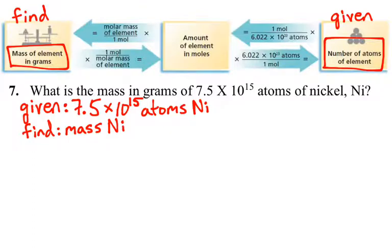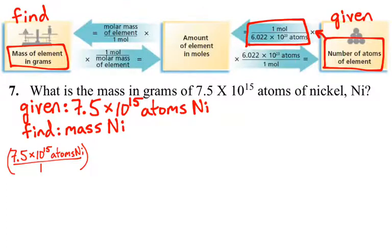So, again though, we will start off the way we always do. We write down what we are given in fractional form. So, we're given 7.5 times 10 to the 15 atoms of nickel over 1. And then when we look up at our diagram, we see, okay, if we multiply this times 1 mole over Avogadro's number 6.022 times 10 to the 23rd atoms. That's our conversion factor that will help us get from atoms to moles. So, we write this in then.